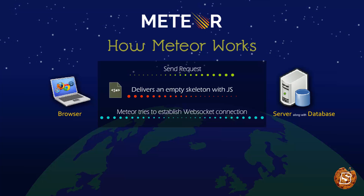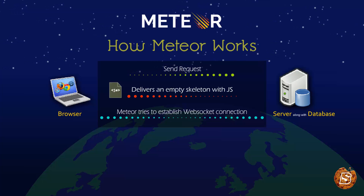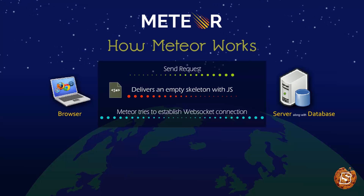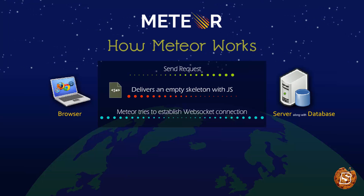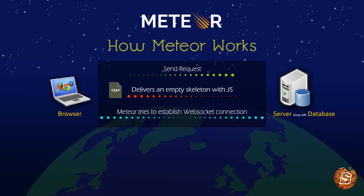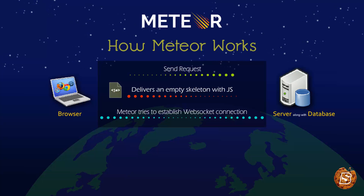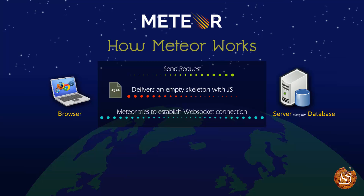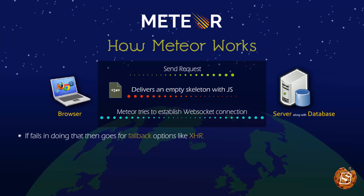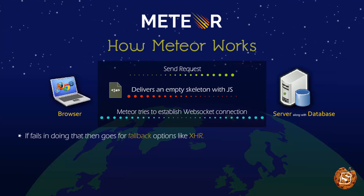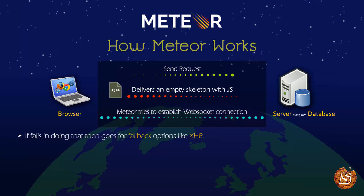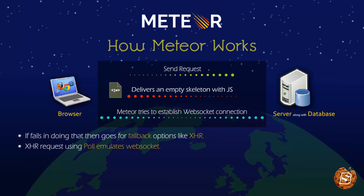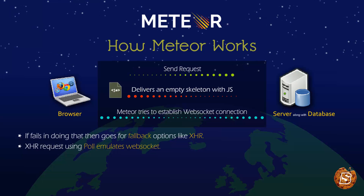As soon as the request is received by the server, the server tries to establish a WebSocket connection. And if the browser supports WebSocket, it establishes that connection. Otherwise, it will try to mimic the WebSocket connection by having some fallback options, like making XHR requests which will mimic WebSocket by continuous polling method.